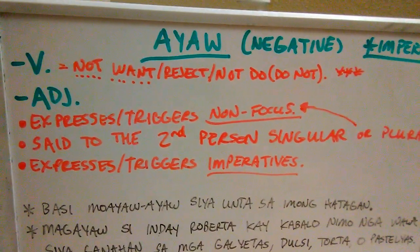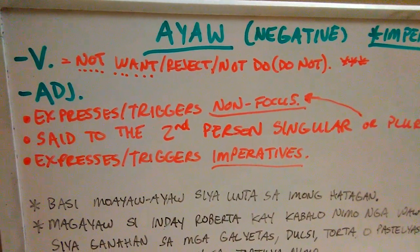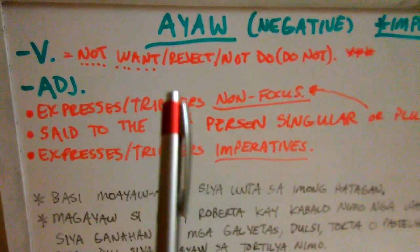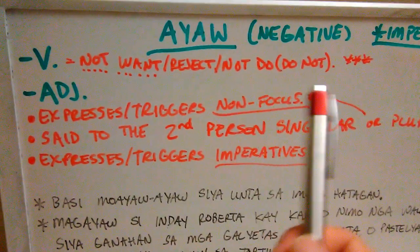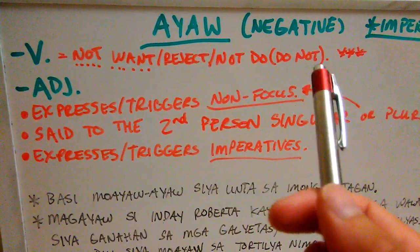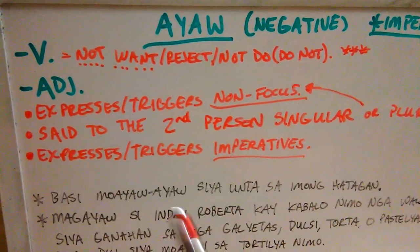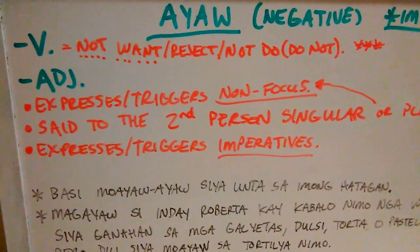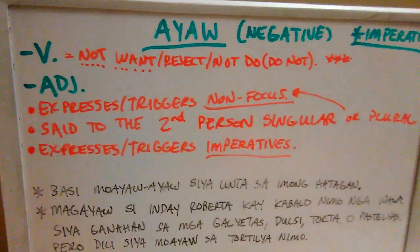As a regular verb, when we're not talking about an imperative or command form, we know it as 'not want.' If we want to express it as an imperative — or rejection — it's going to mean 'do not,' 'don't,' or 'stop.' You'll see that through further examples in another video. Ayaw can also be used with adjectives.